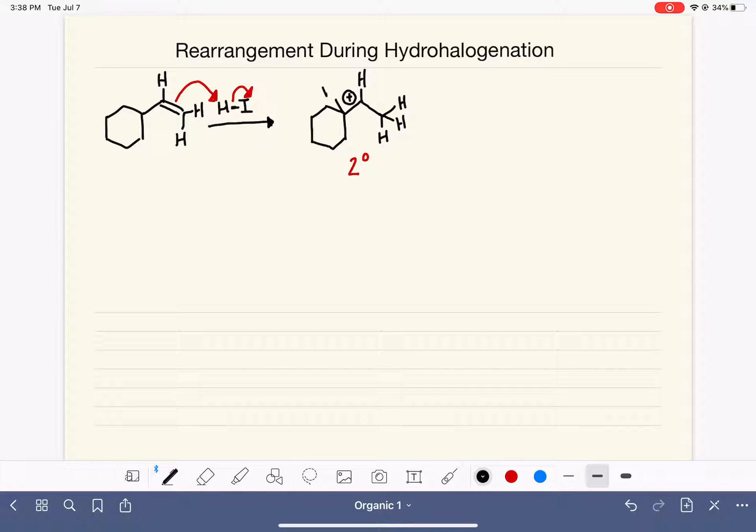There's a hydrogen atom on that carbon that we can shift to change the location of that positive charge. That's going to give us this molecule right here with the positive charge on a tertiary carbon, which gives us a tertiary carbocation, which is good.